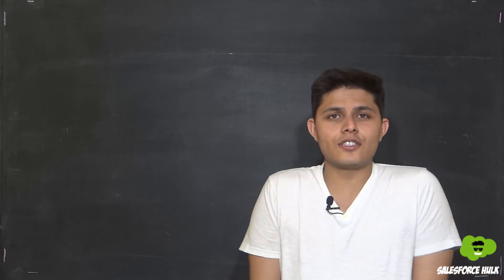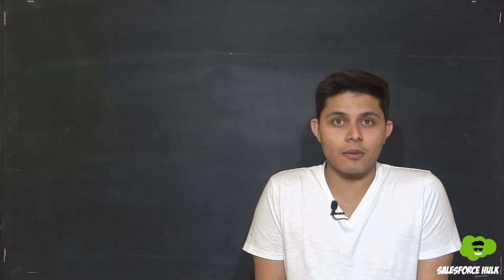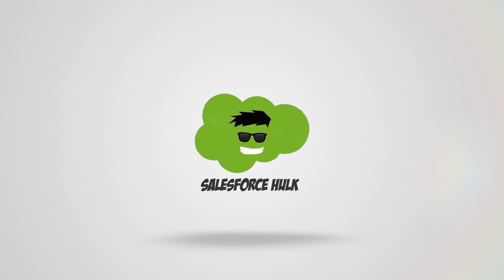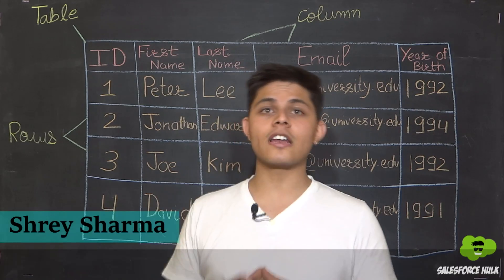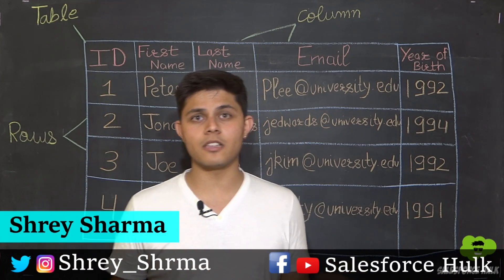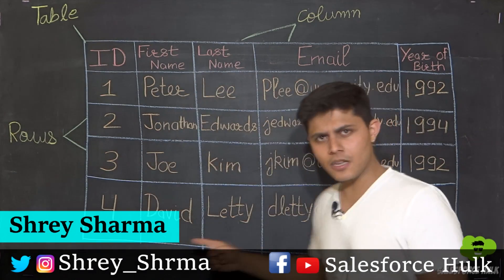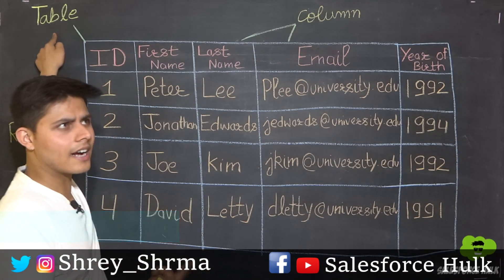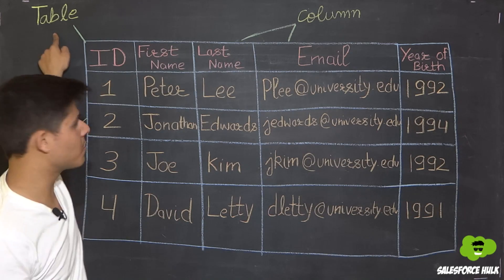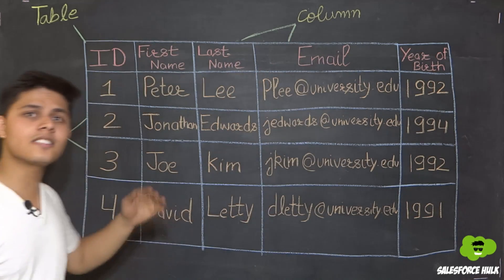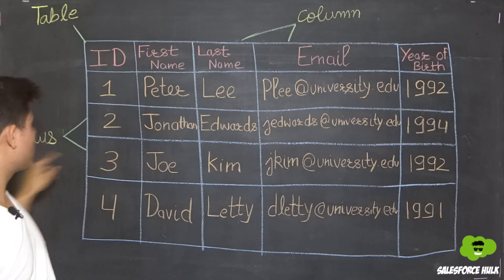In this video, I'm going to discuss Salesforce as a fancy database. A database is a collection of organized information, and in databases we generally store information in tables. Here is a simple table, and this table stores different kinds of information or types of information — we call these columns — and the different instances of this table are called rows.